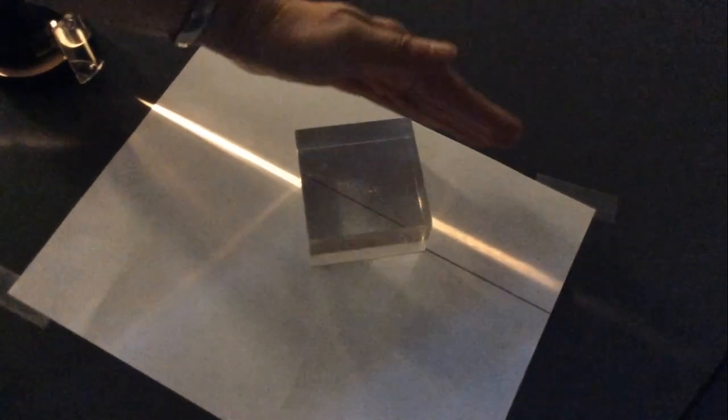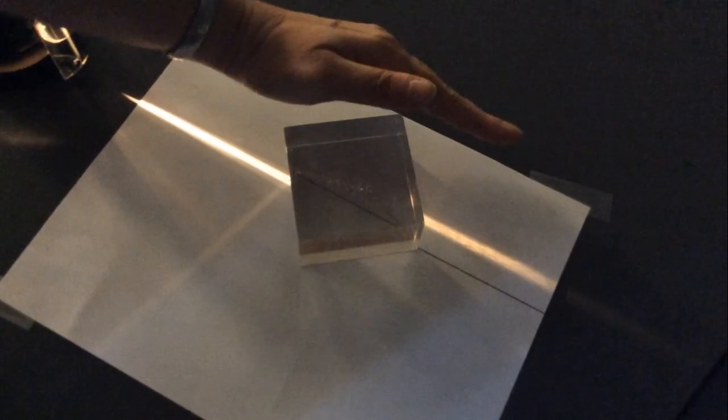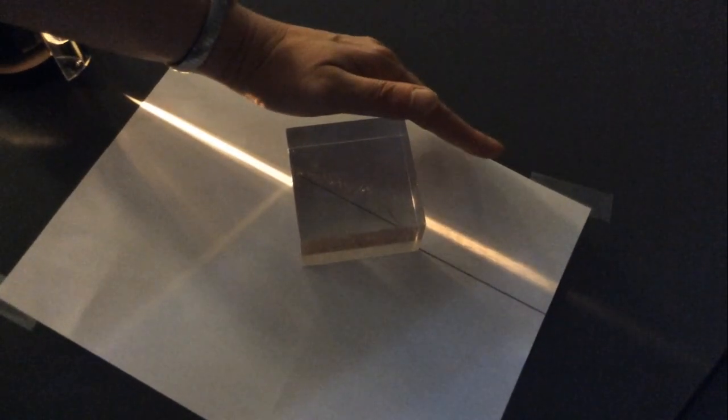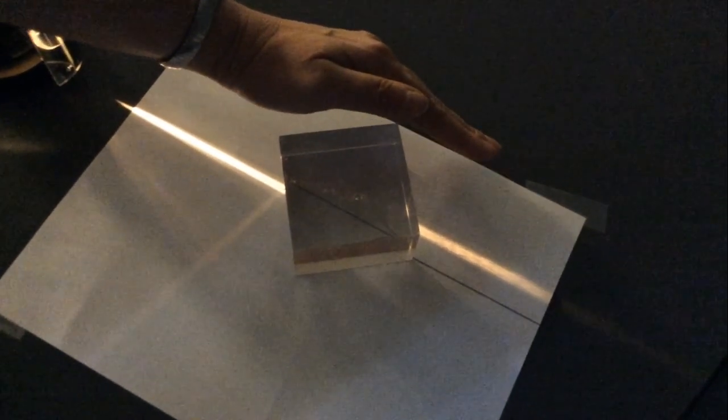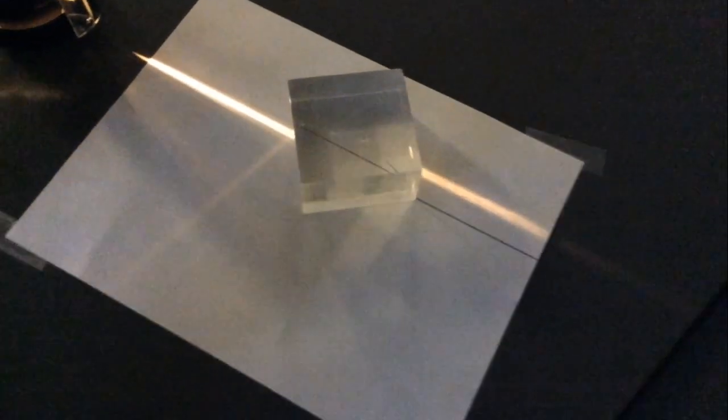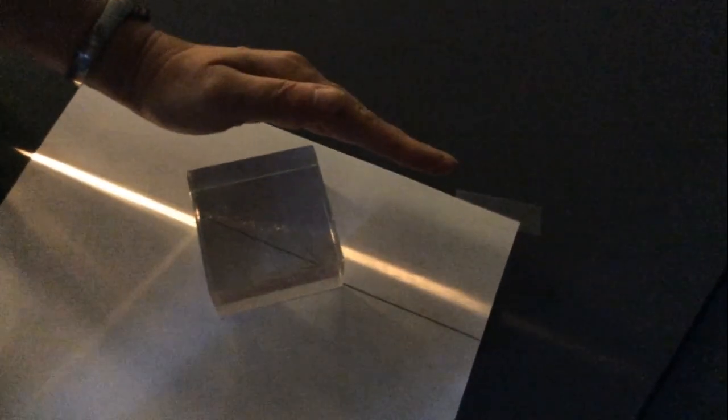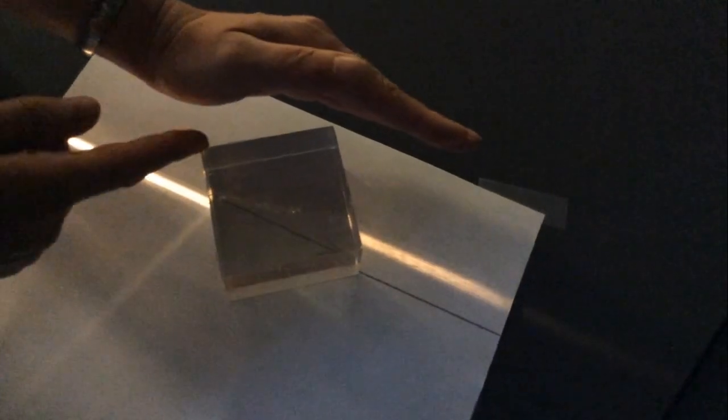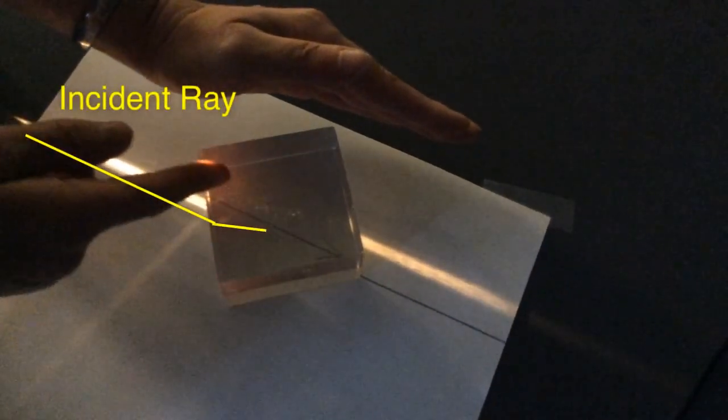And what it tells us is that it happens because the light—I'm trying to make it a little bit darker so you can see that the light ray is—it's probably when you show the demo, try to make it in a dark room and then the kids can see it better—that the light ray bends.